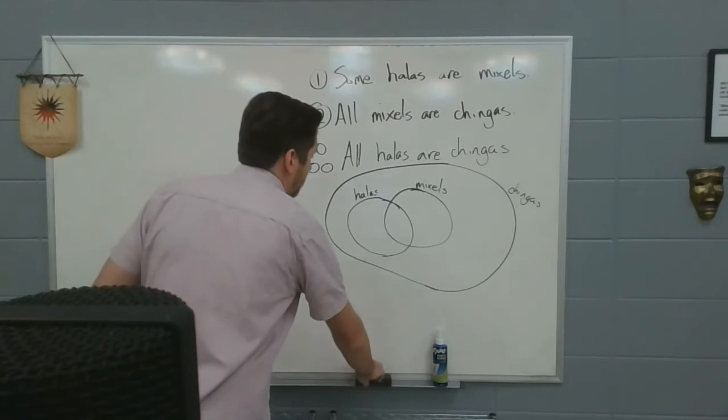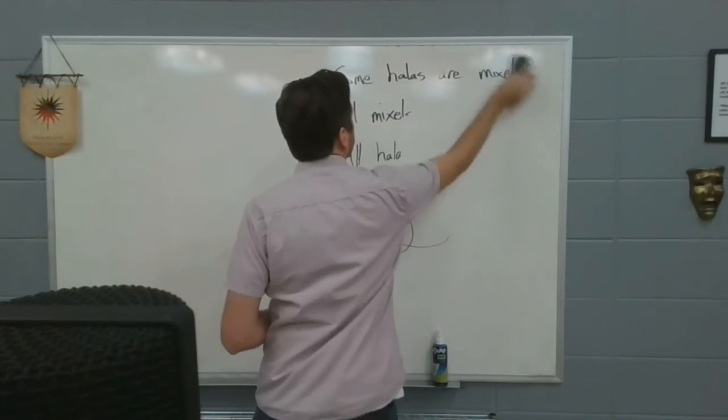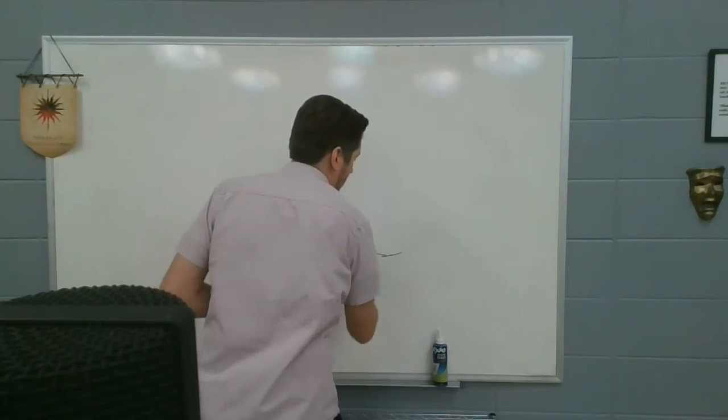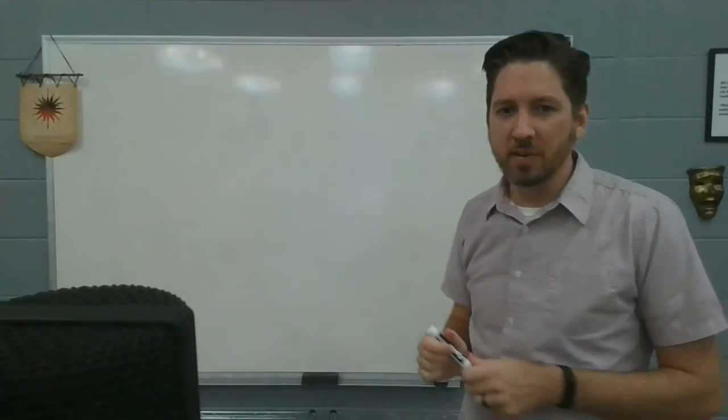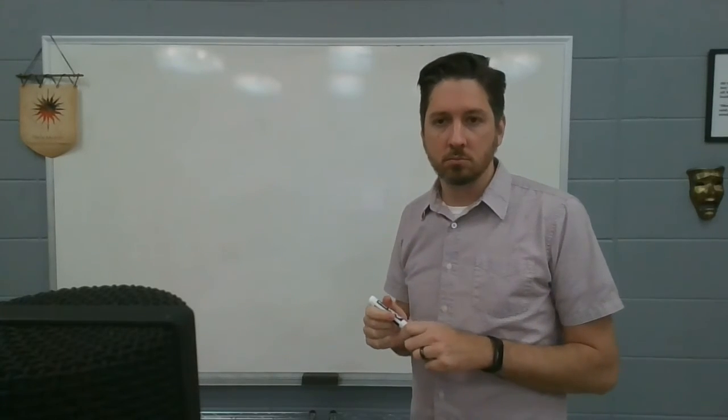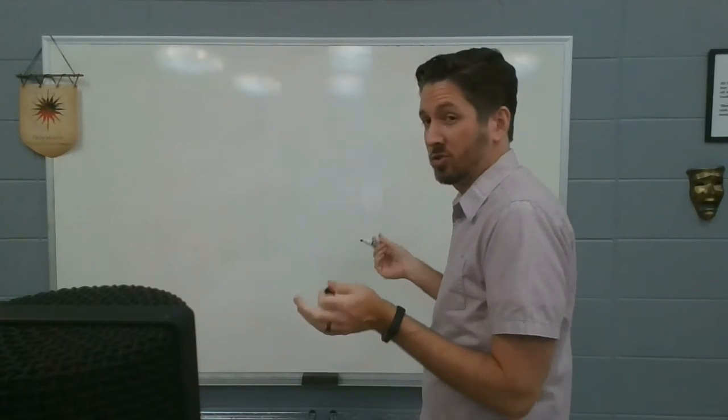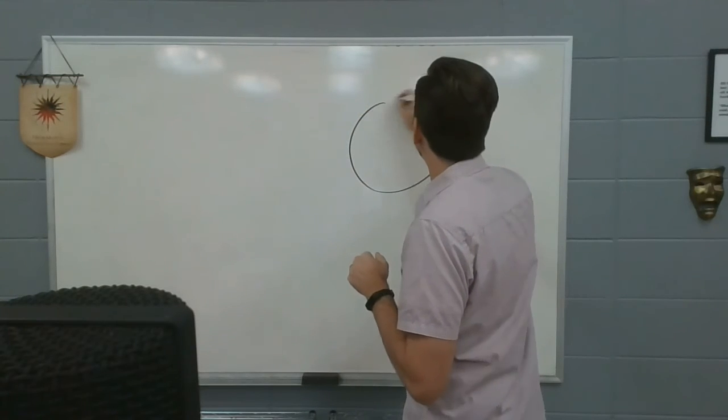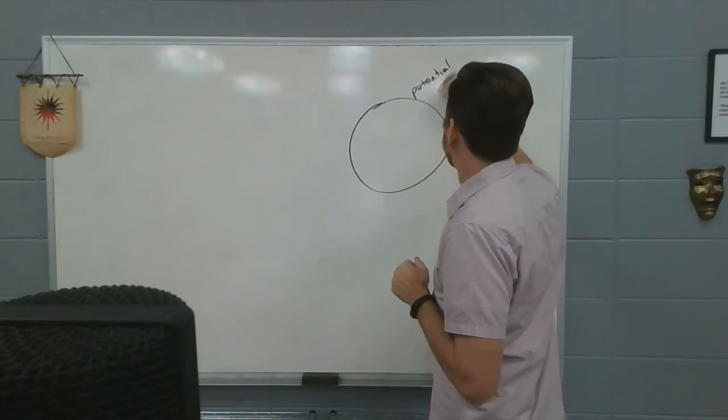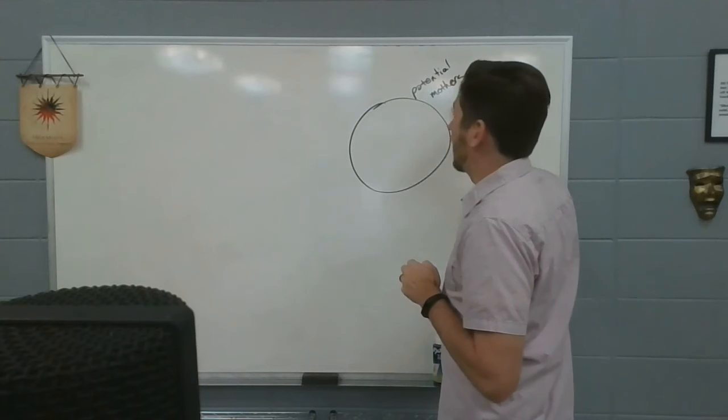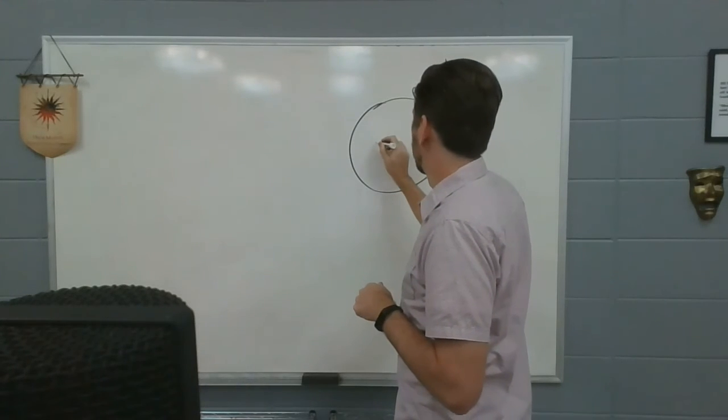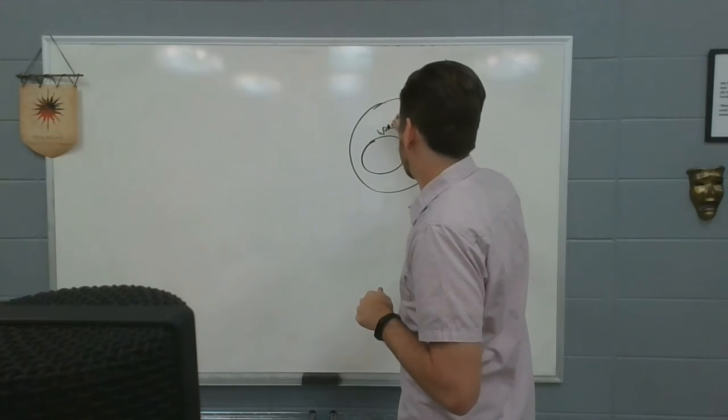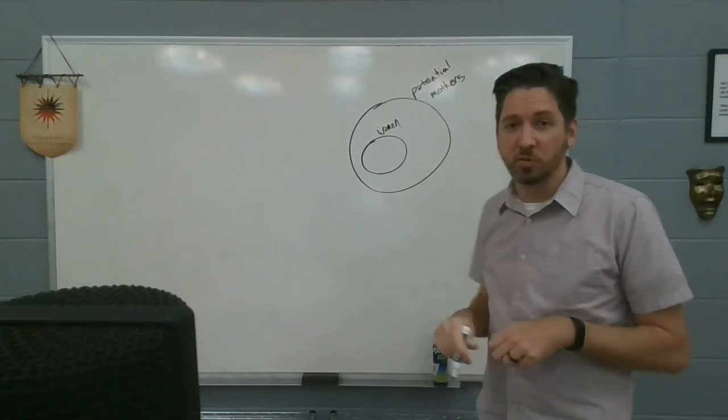Let's look at one specific example from the exercise you're about to be doing. It uses real words. It starts off and says, all women are potential mothers. True statement. Sure. Again, it doesn't matter if the statement's true, though. We're just diagramming and looking at the logic. All women are potential mothers. So I've got a potential mothers circle. And all women are in that side. So here's women. All women are inside the potential mother circle.